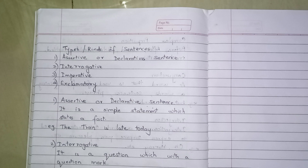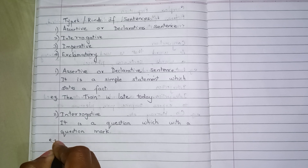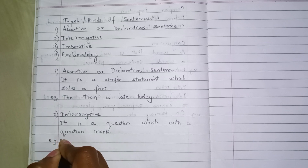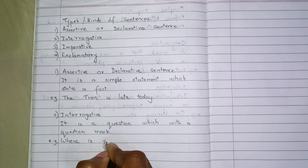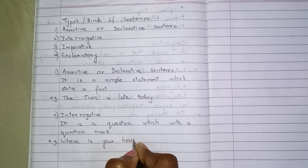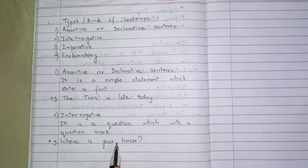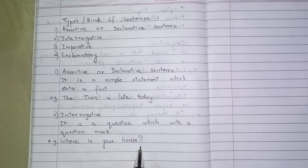I will write an example for you so that you will be able to understand in a much better manner. Example: where is your house? In this interrogative sentence you will be able to see that there is a question mark.